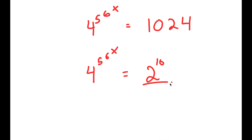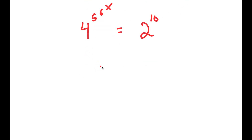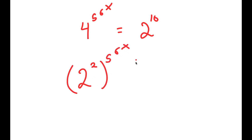Now that I rewrote this, and we have a base of 2 and a base of 4, I want to make both of these bases the same. 4 we can rewrite as 2 squared. So now I have 2 squared to the power of 5 to the power of 6 to the power of x is equal to 2 to the power of 10, and now both of these bases are the same.